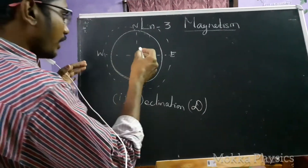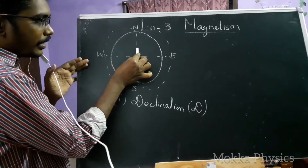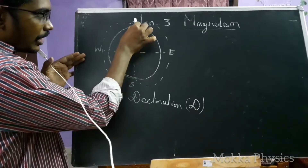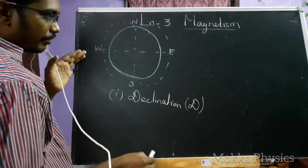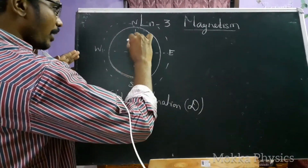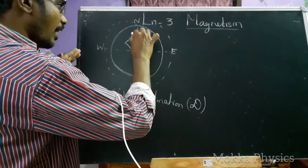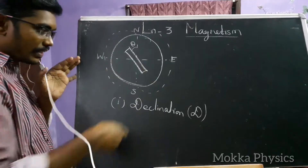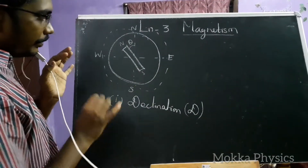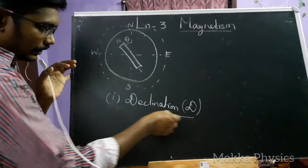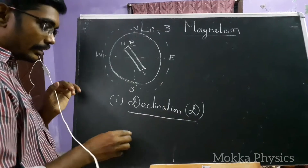If you have a magnet freely suspended, it will align in the north-south direction. However, since the magnetic field is there, it will be inclined at a particular angle with respect to the geographic axis. This angle is called Declination.